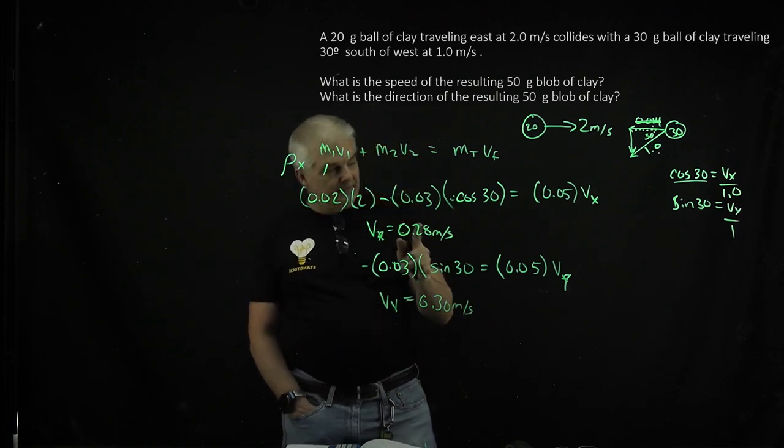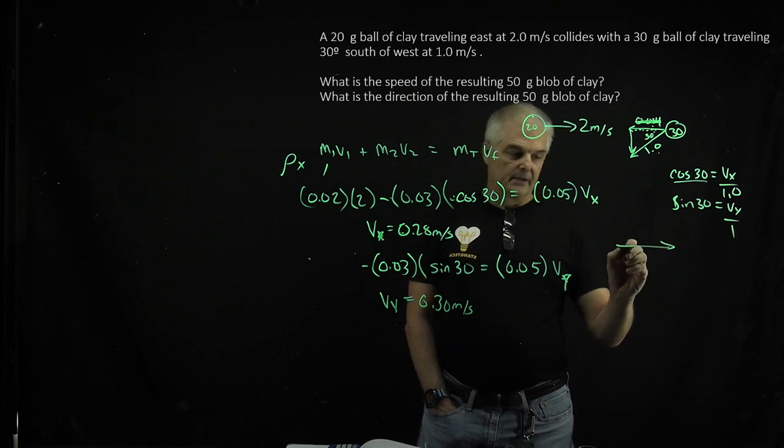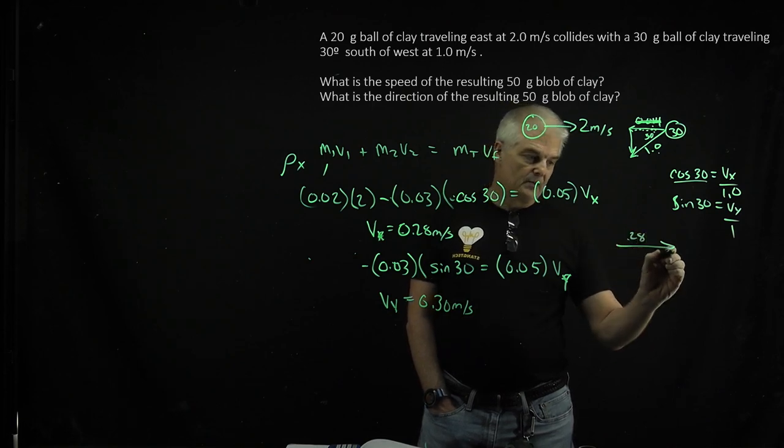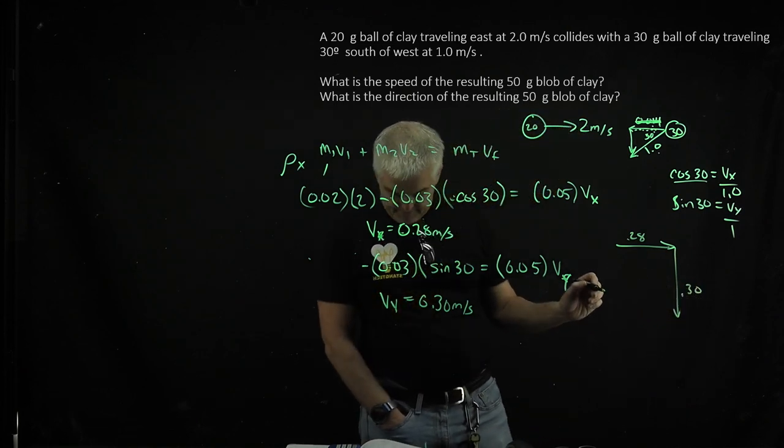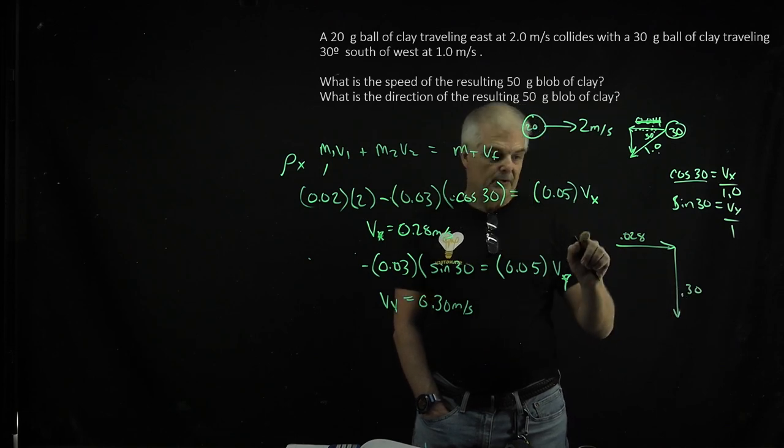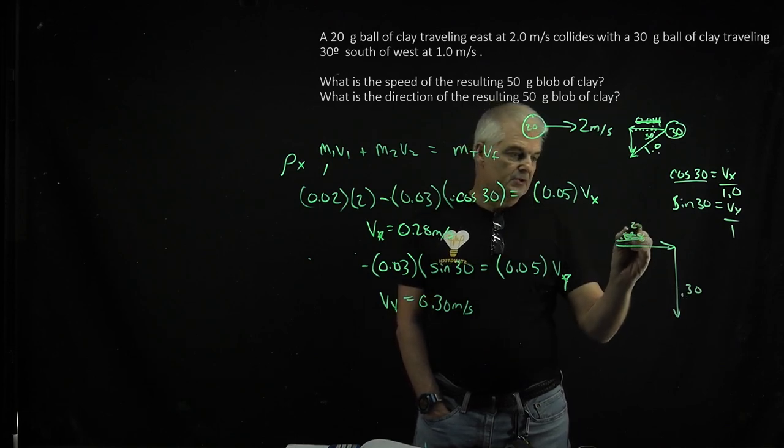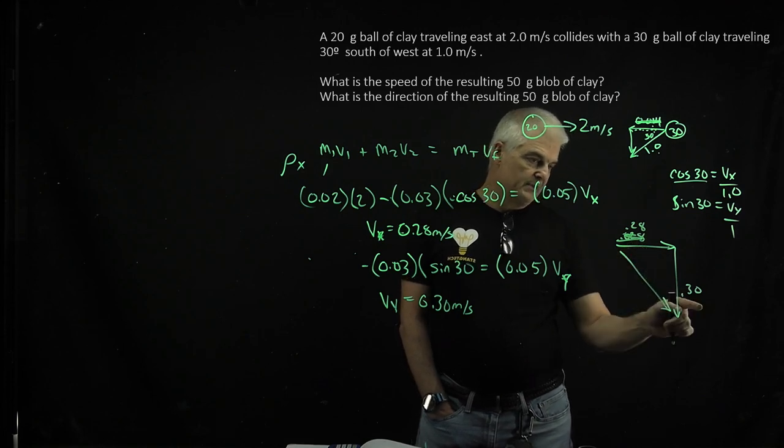The final velocity—you have to add them vectorially. It's going 0.28 this way and 0.30 that way. The resultant vector will be these two.